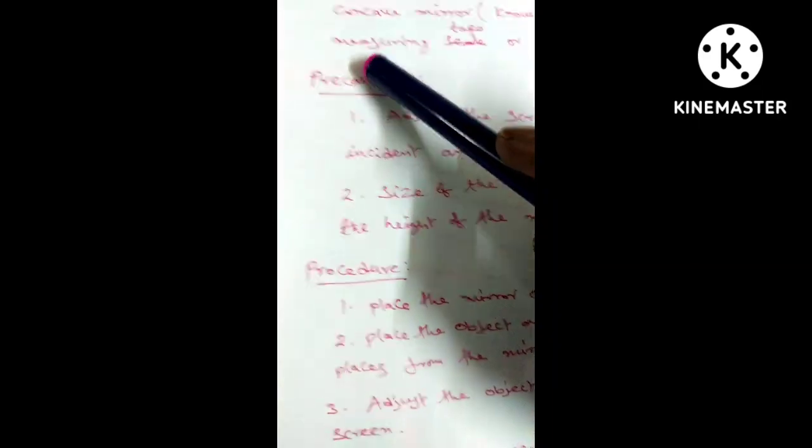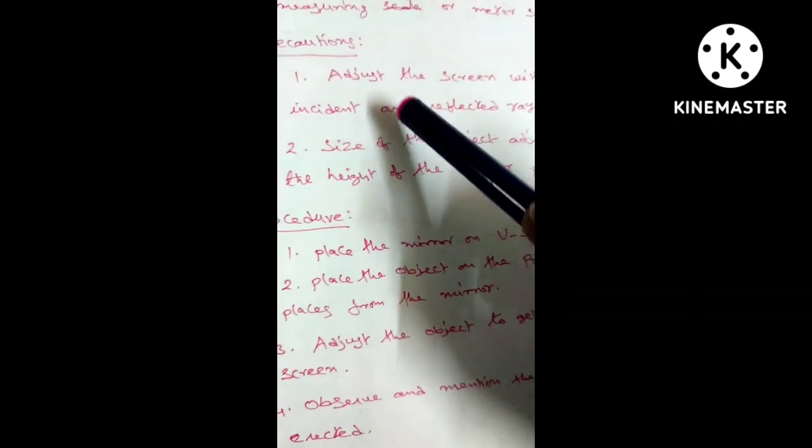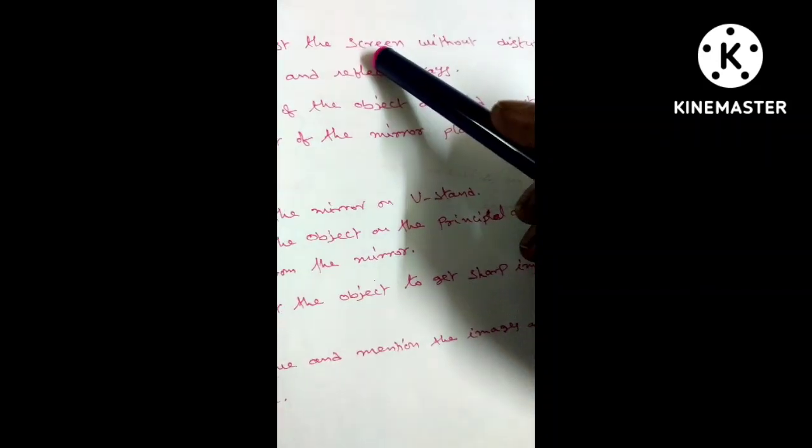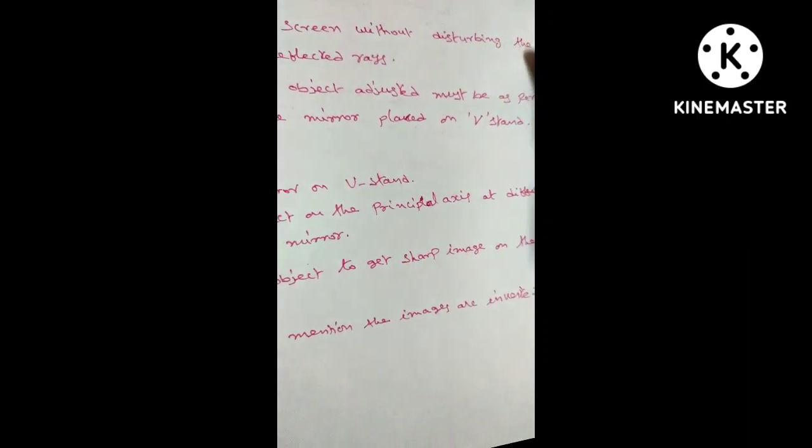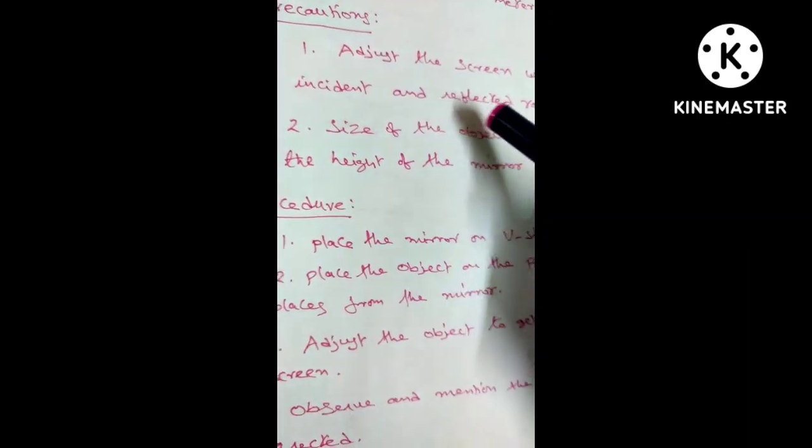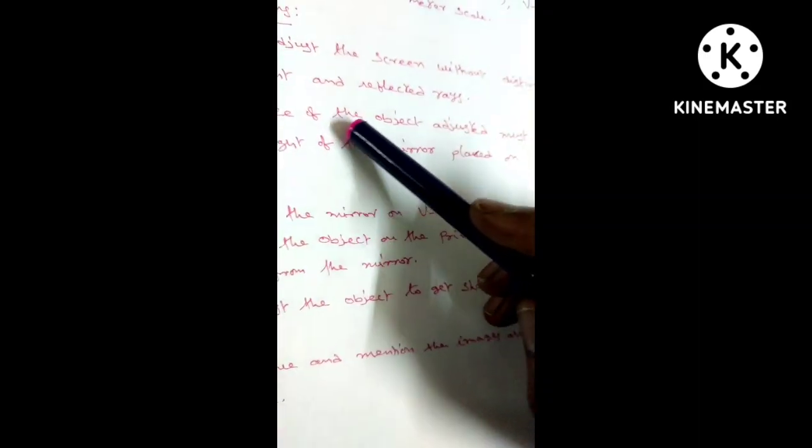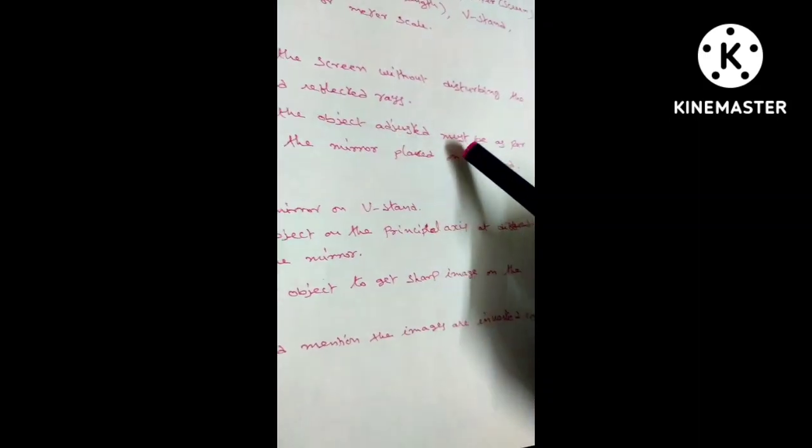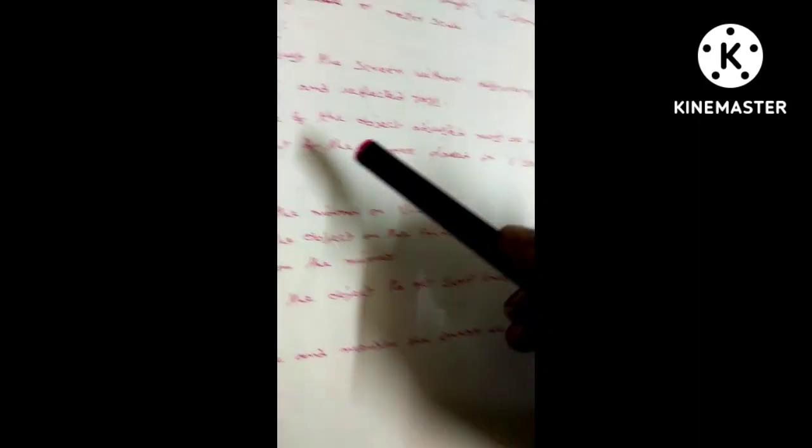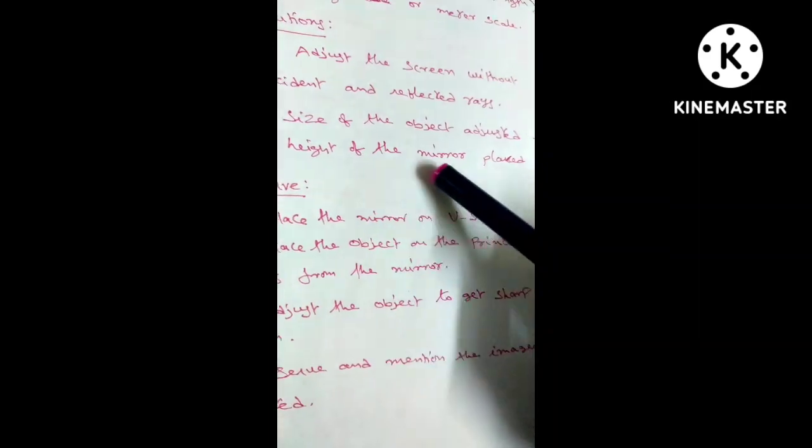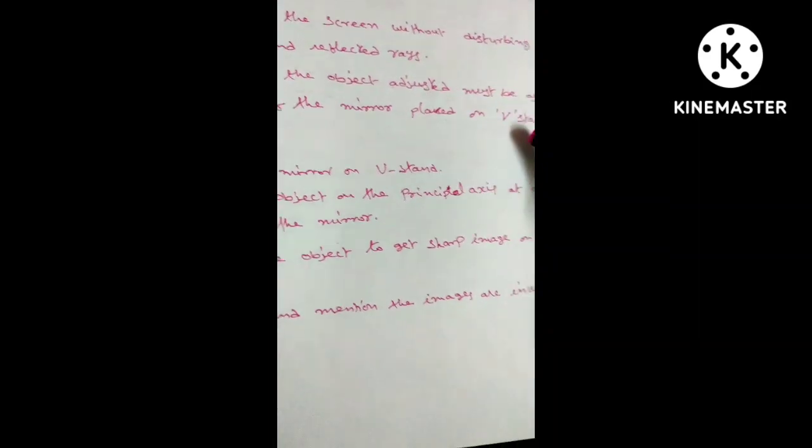V-stand, measuring tape or meter scale. Precautions: Adjust the screen without disturbing the incident and reflected rays. Size of the object adjusted must be as per the height of the mirror placed on V-stand.